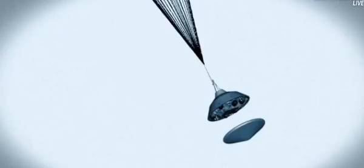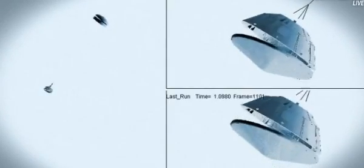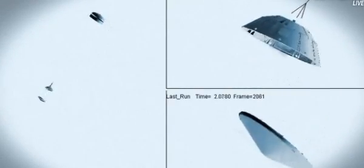At that point, we have to get that heat shield off. It's like a big lens cap blocking our view of the ground to the radar. The radar has to take just the right altitude and velocity measurements at just the right time, or the rest of the landing sequence won't work.